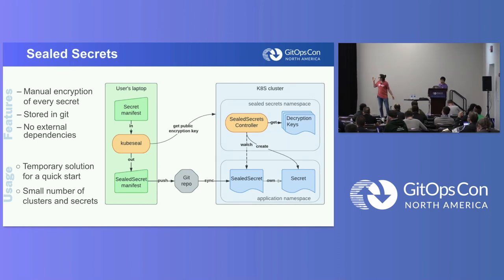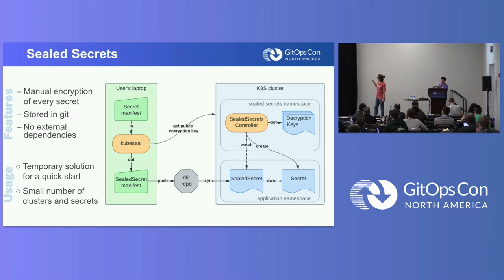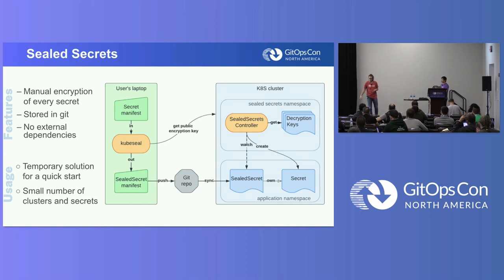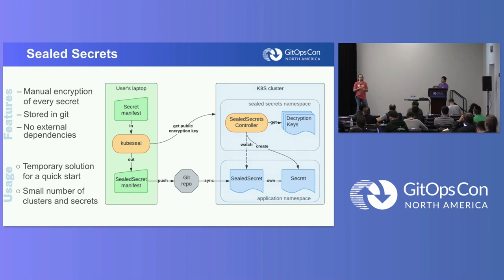If we had time we could talk about the chicken-and-egg problem — why you need a password to access your other passwords, and where to keep the first password. We could also talk about decryption key leaks: if your key is somehow compromised, basically all your secrets are compromised too and you wouldn't even know. The conclusion for Sealed Secrets is that it's a great tool for quick starts or POCs, however it might not scale well for enterprise and production use cases.